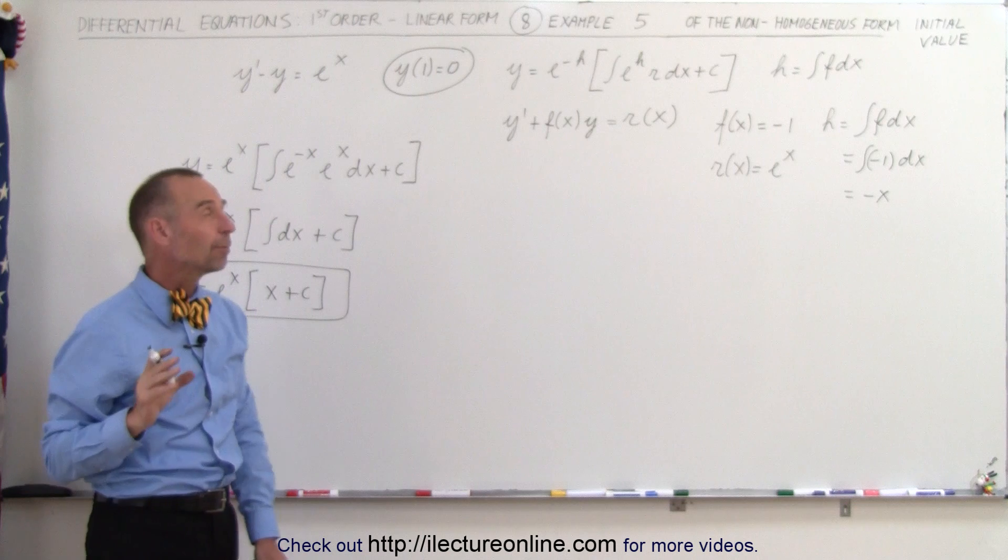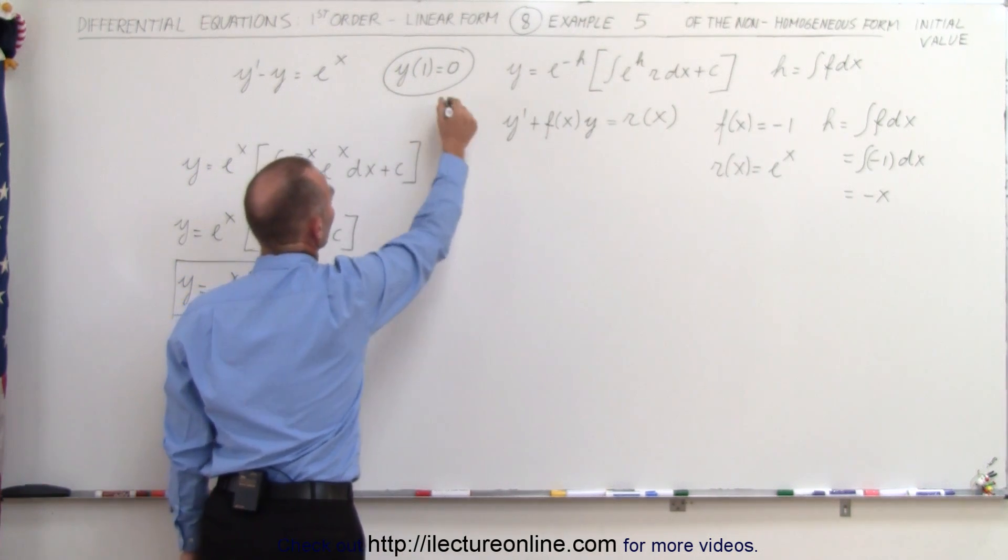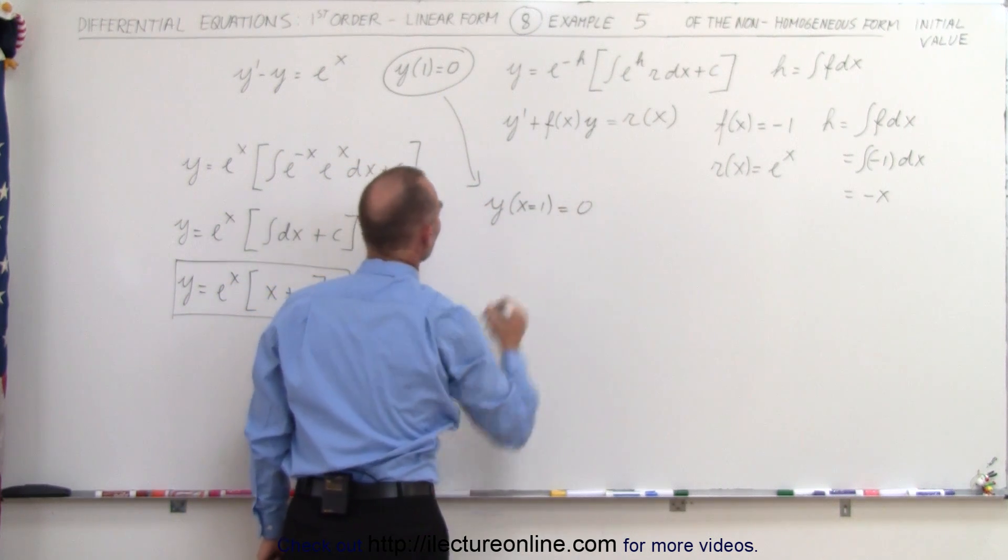However, we've been given some initial conditions. We know that when x is equal to 1, y is equal to 0. So what this means is that y, when x is equal to 1, is equal to 0.